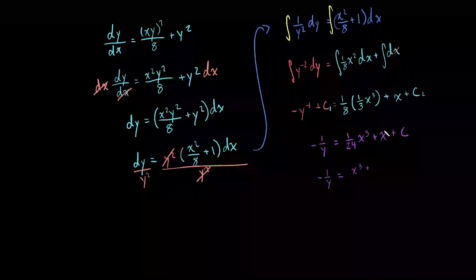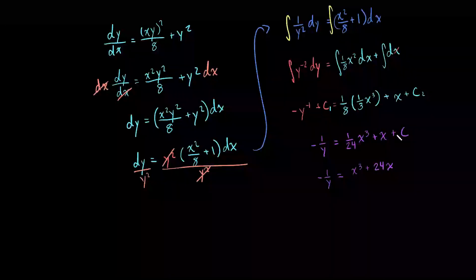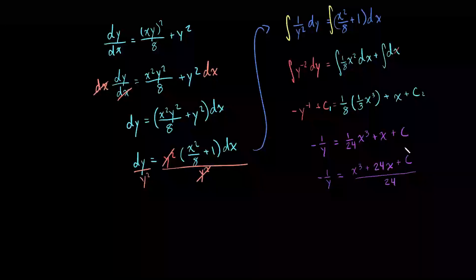So x to the third, and we want to get this over 24, so that's going to be 24x over 24. We haven't changed anything; we just changed the appearance of our variable. And 24c is just another constant c, so we can put that over 24.